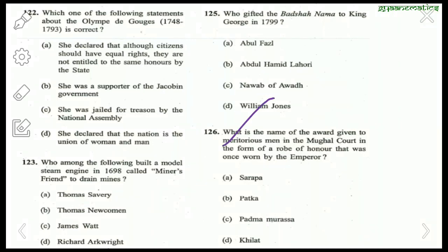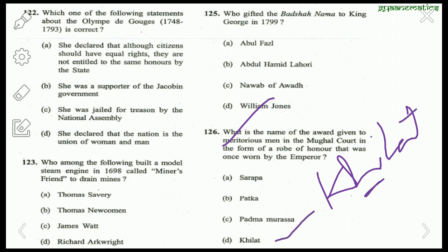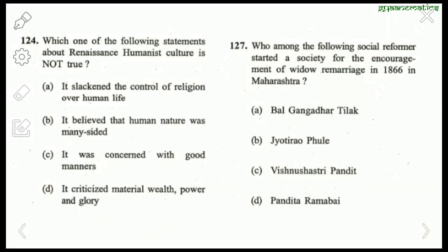Question 126: What is the name of the award given to meritorious men in the Mughal court in the form of a robe of honour once worn by the emperor? Khillat (or Khallat) is the answer. Question 124: Which statement about Renaissance humanist culture is not true? 'It criticized material wealth, power and glory' — the right answer is D, as Renaissance humanism actually celebrated these things.